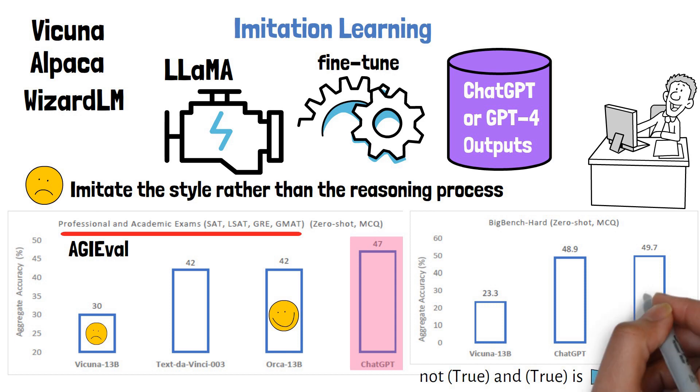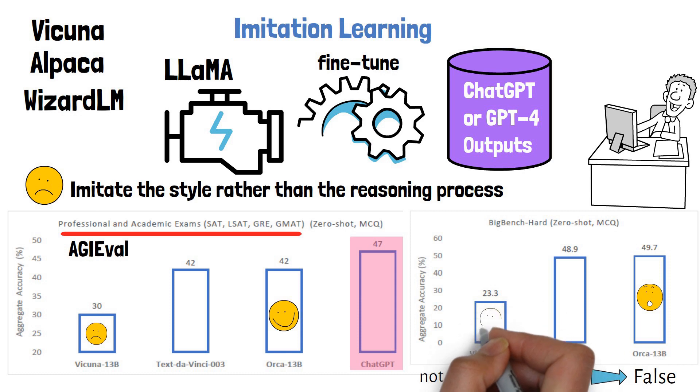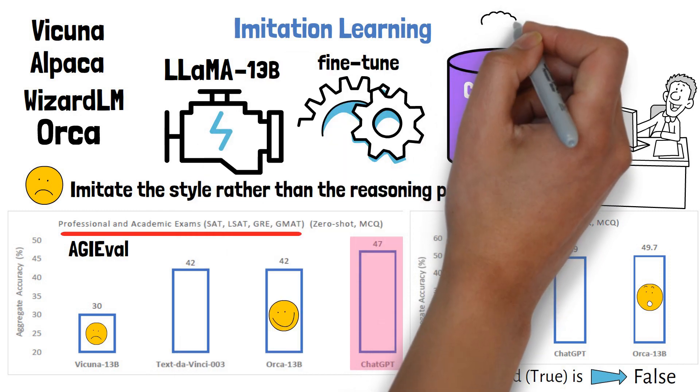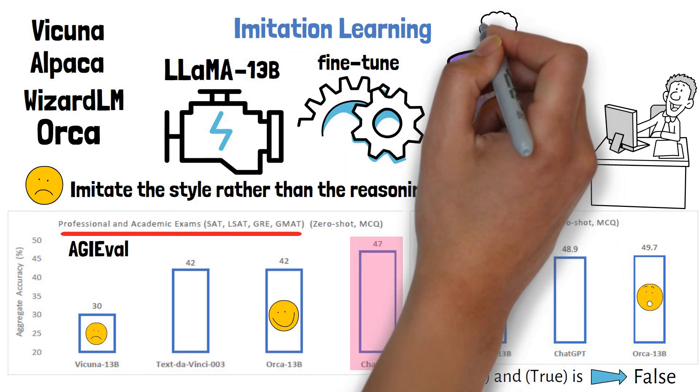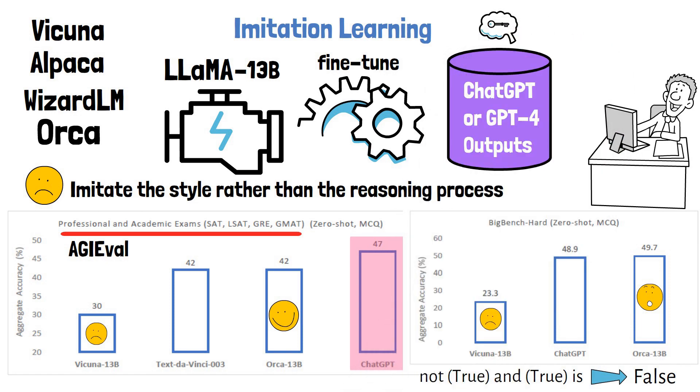And here ORCA outperforms even ChatGPT and improves over Vicuña by more than 100%. ORCA model also starts from LLaMA, with 13 billion parameters, and fine-tuned on ChatGPT and GPT-4 outputs. But the key idea is with how they build their training dataset.